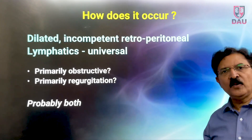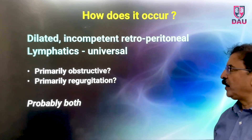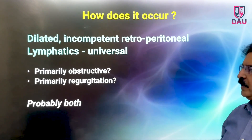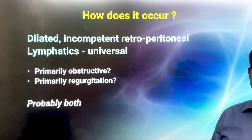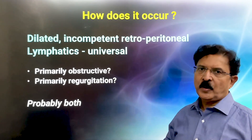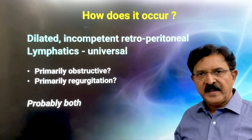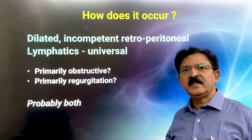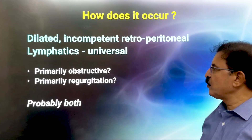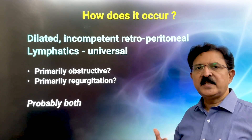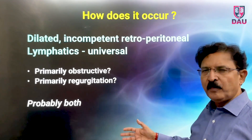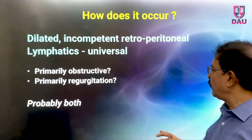These dilated, incompetent retroperitoneal lymphatics are universally seen in all patients of chyluria. There are two theories: some people say there is an obstruction in the lymphatic which is why these lymphatic vessels become dilated and tortuous; some people say it is a regurgitation phenomenon. Probably both factors play a role.